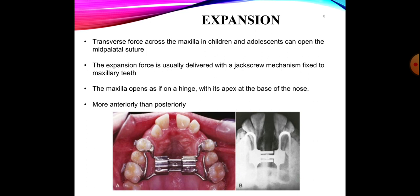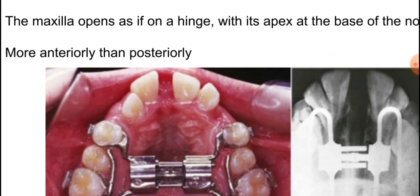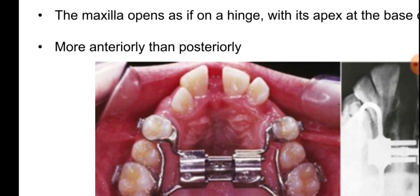The maxilla opens on a hinge — it opens more anteriorly and less posteriorly. This is because the suture begins to fuse posteriorly first and then fuses anteriorly. Therefore more expansion will be achieved anteriorly and less expansion posteriorly, which is shown in the picture where we can see a gap between the incisors.